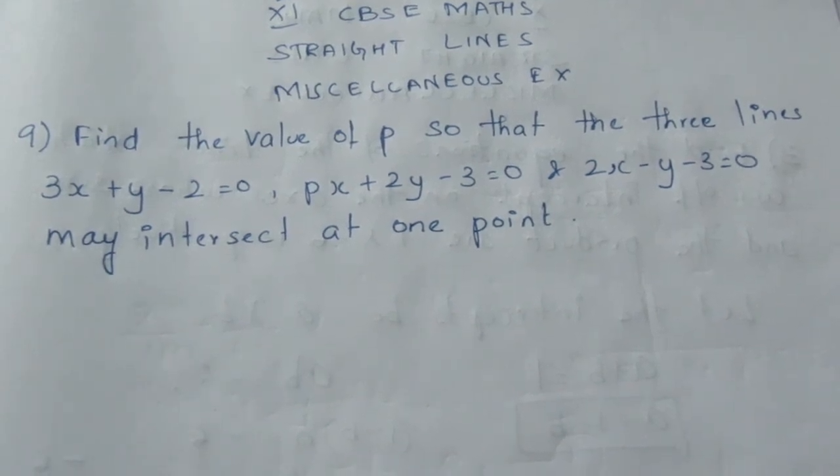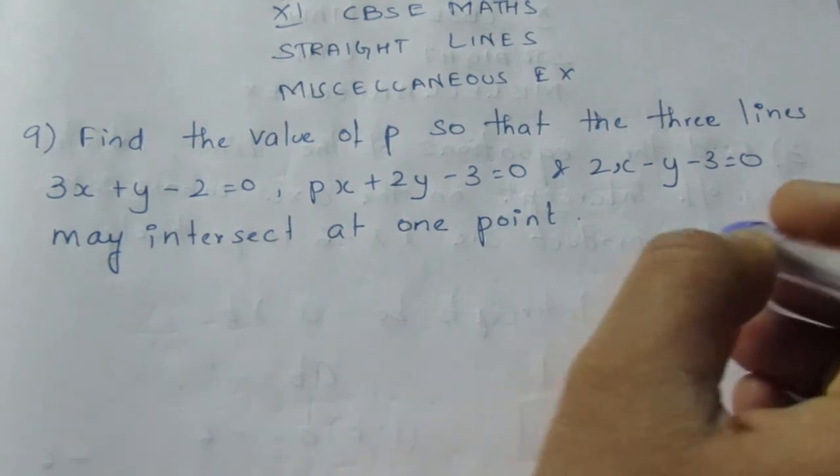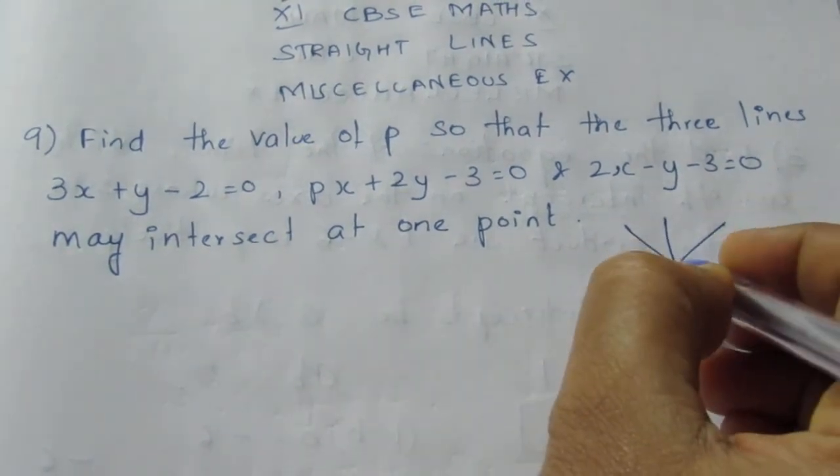Find the value of P so that the three lines 3x + y - 2 = 0, px + 2y - 3 = 0, and 2x - y - 3 = 0 may intersect at one point. That is, the three lines intersect at the same point.